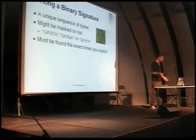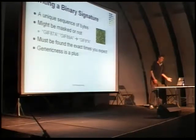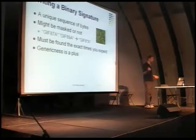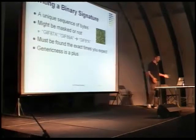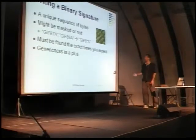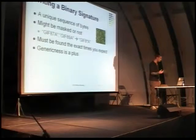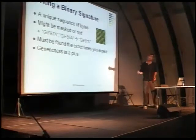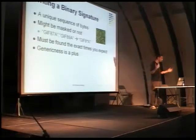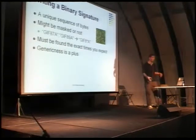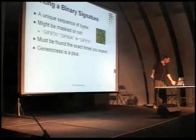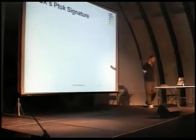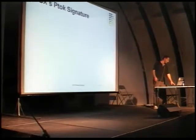Because we said earlier that the code might change, what I mean by genericness is a plus: the code changes among versions and you want to track the same piece of code that you have to patch. Basically, if you can come up with the same mask or sequence of bytes that will locate the place you want to patch, then you're good. Otherwise, you will have the need for a few more signatures for the same patch.